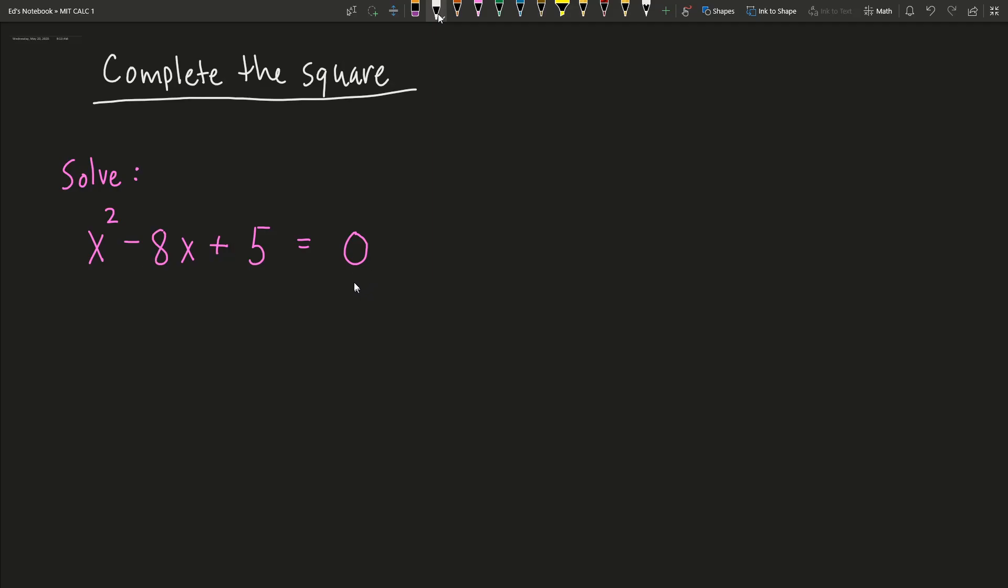So we're going to go ahead and use the steps for completing the square. And the first step is to make sure that it's in this form: x² + bx = c. So I want to get that. I basically take this constant term and I'm going to put it on the other side of the equation. To do that, I'm going to subtract 5 from both sides. So I'm going to be left with x² - 8x = -5.